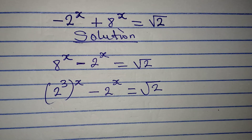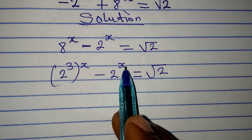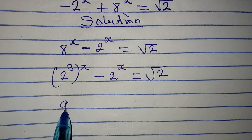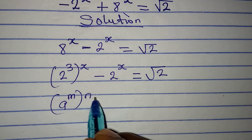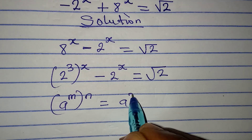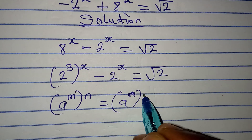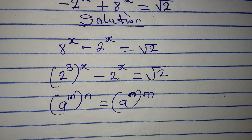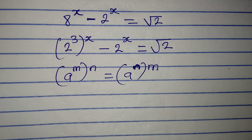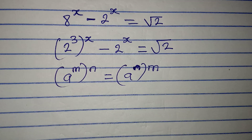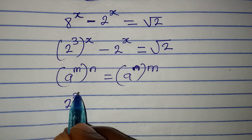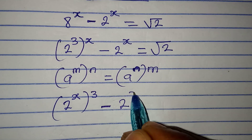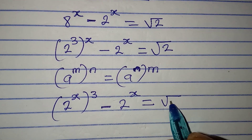Now the next thing on my mind is trying to get 2^x in two places, and I can get 2^x from here. Because if you have a^m to the power of n, it is the same thing as a to the power of m times n — the order does not truly matter. So now we have 2^x to the power of 3, minus 2^x, and this is equal to square root of 2.